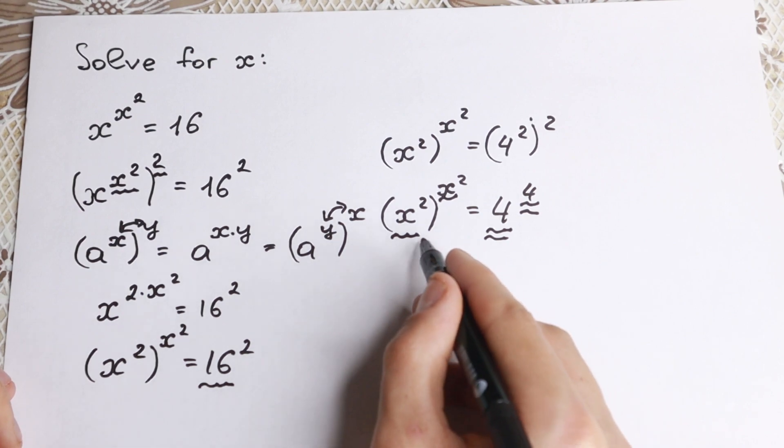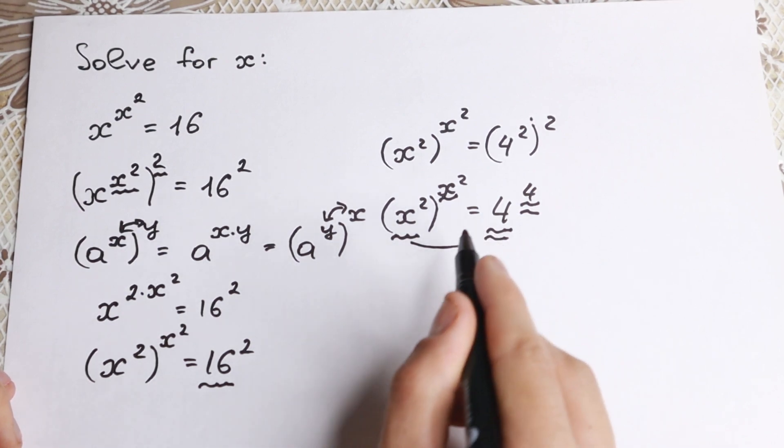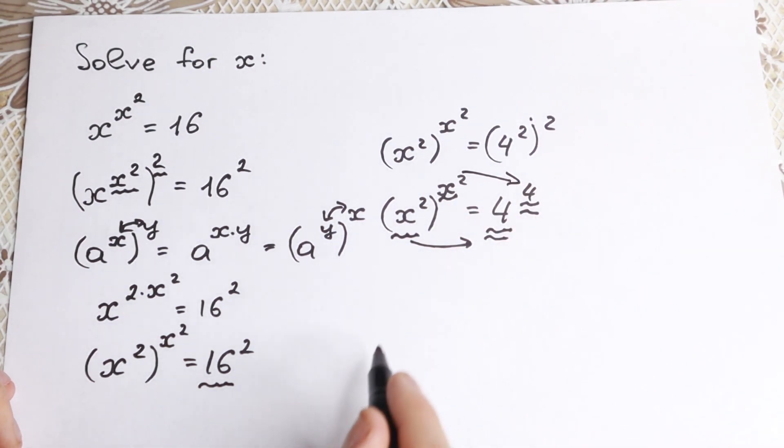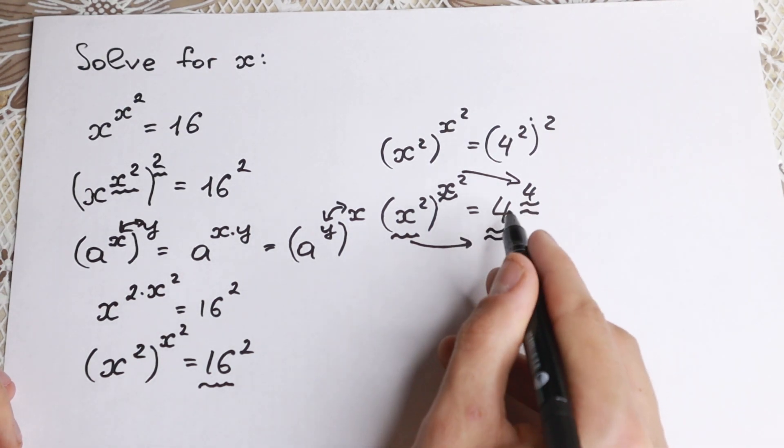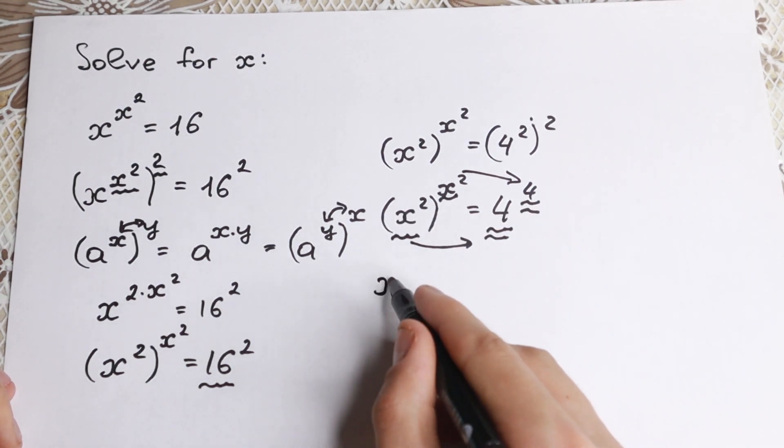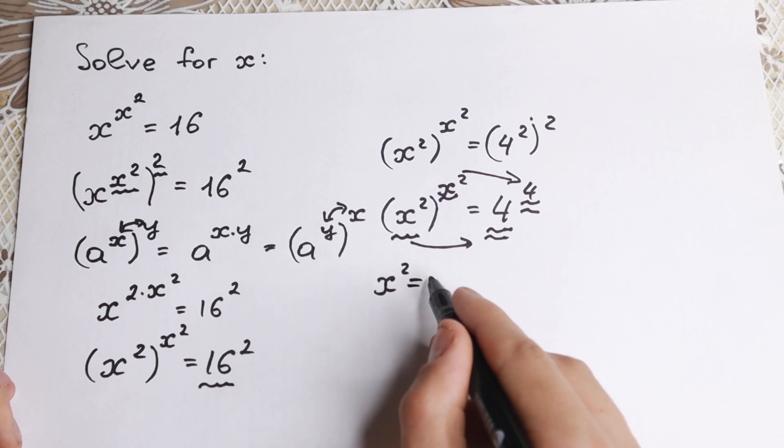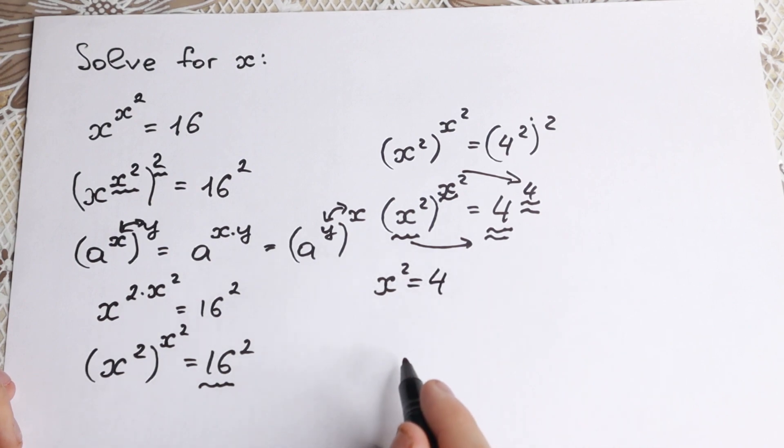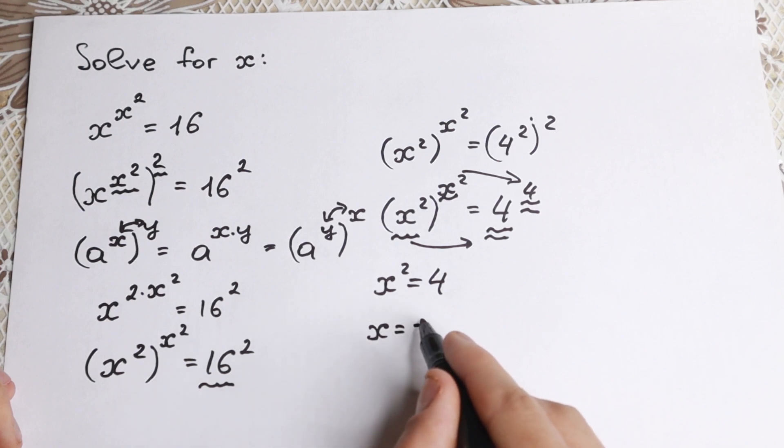So the only case this equation works is when base equals base and exponent equals exponent. But in our case both elements are the same. So we can easily write that x squared equal to 4. And from here this is a classic equation, x equal to plus minus 2.